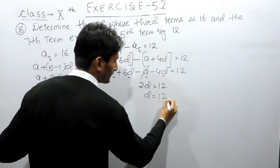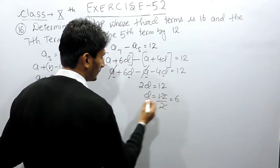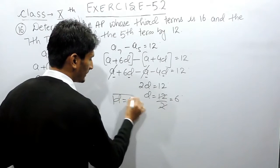So here the value of D must be equal to 6. The value of common difference must be equal to 6.